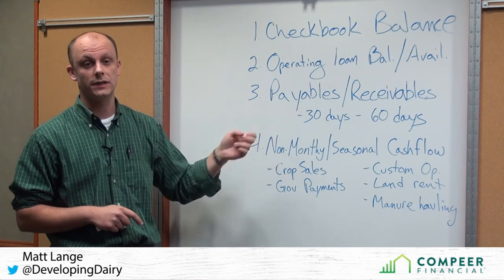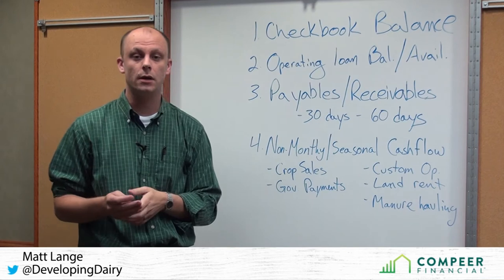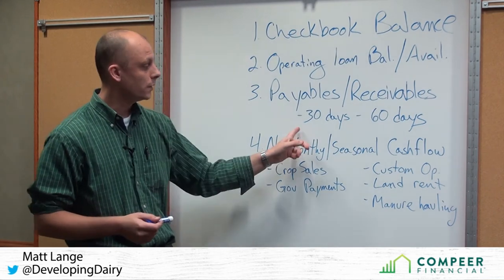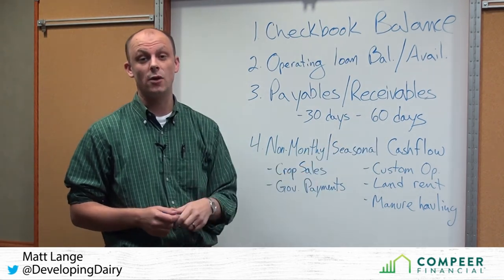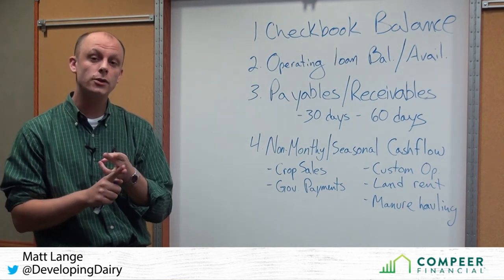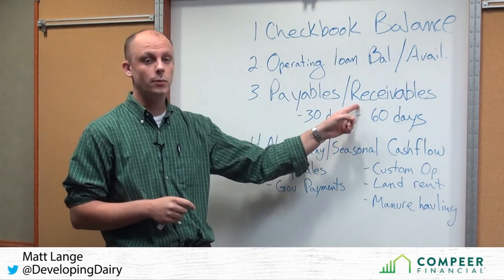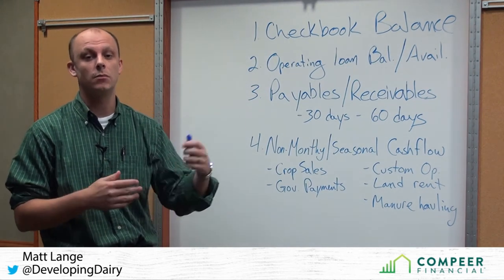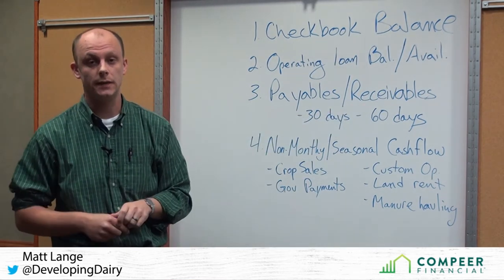The third item is payables and receivables. Payables are those bills at the end of the month or period that were left unpaid. Typically most businesses have 30-day payables, but it's important to track not just where our payables are at on the 30 days, but those beyond that — who do we owe, how much do we owe them, and when should they have been paid. In receivables, that's how much money is potentially still owed to us — in a dairy, this might be the milk check receivable. Those items are important to track how much cash will be coming into the business.